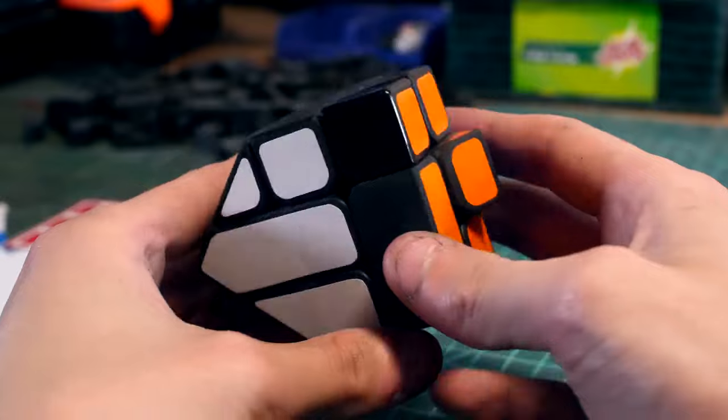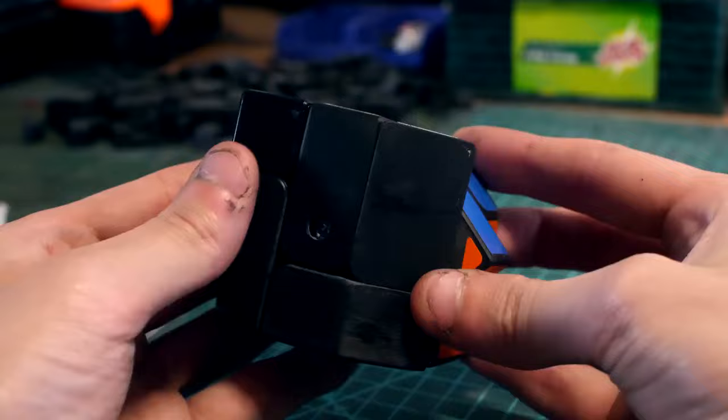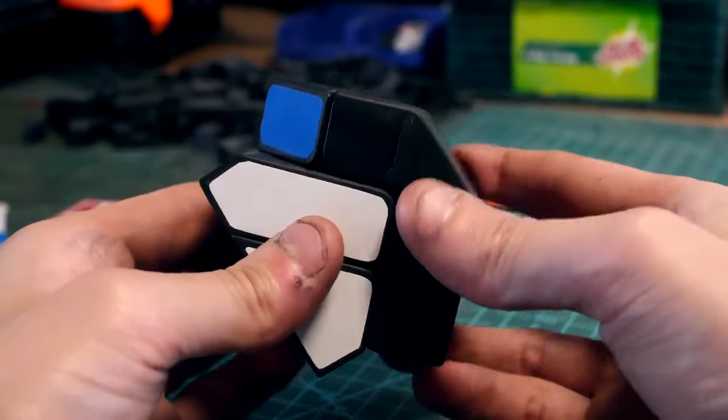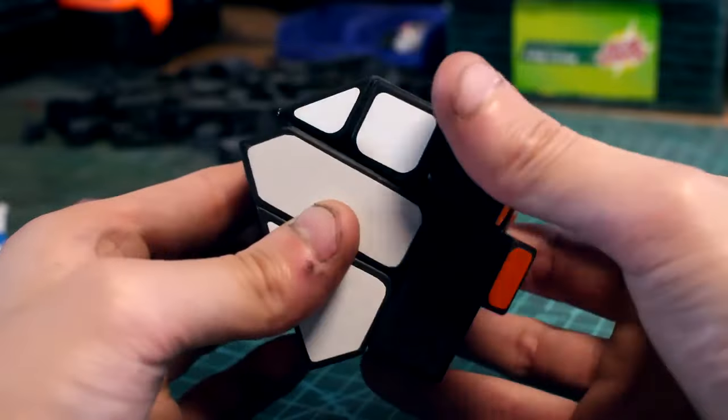But anyways, as you can see here, this puzzle turns just like a regular Mephits bandage cube and it's crazy bandaged. It's almost impossible to scramble this thing up, let alone solve it. In fact, I've never solved the bandage cube before, at least not without a load of help.